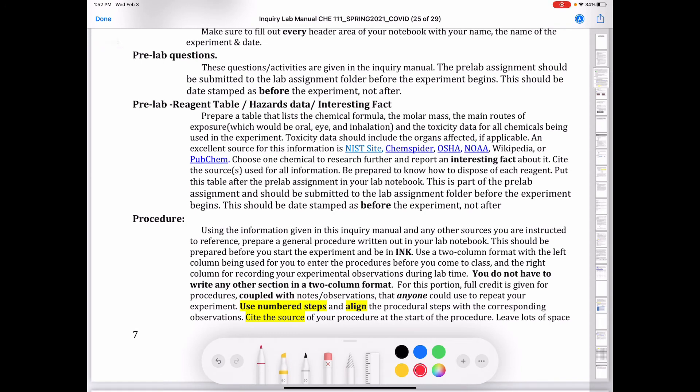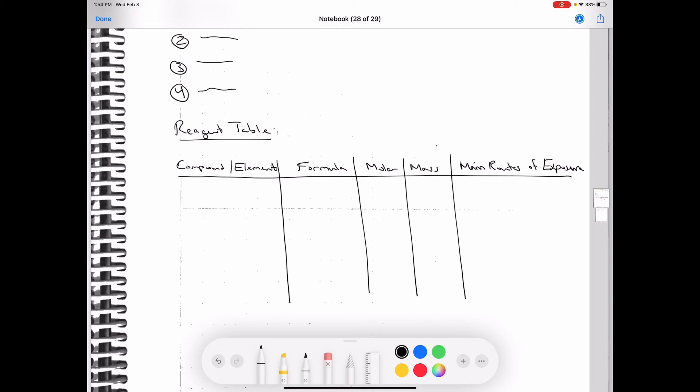And again, what are you going to include in the reagent table? You're going to put the chemical formula for each one of those. You're going to put the molar mass and the main routes of exposure for all of those. Also, be sure to cite the source. And so here I have my table. I didn't use a ruler. You'll want to use a ruler, but you're going to have your water, ethylene glycol, ethanol, brass, copper, zinc, lead, etc. So you want to make sure to have all the compounds or elements that I just mentioned in the reagent table.